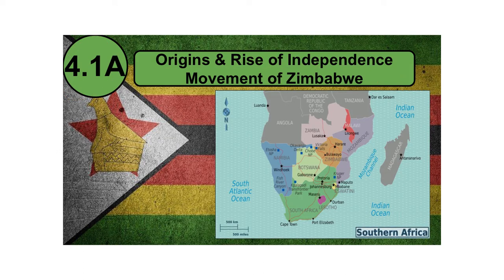Before we begin our study on Zimbabwe — many people in the United States say that Africa is a country, but it is a continent. Many people in the West cannot even locate most countries in Africa. In order to learn about Zimbabwe, we need to know where it's located. Zimbabwe is located right here — the orange country I just circled in Southern Africa.